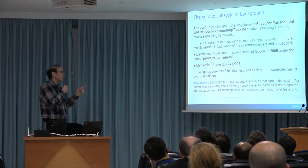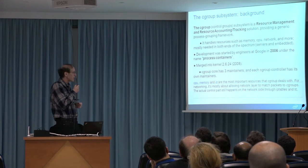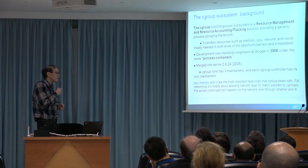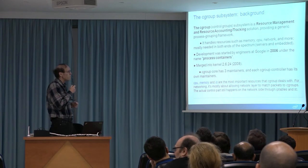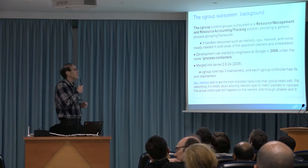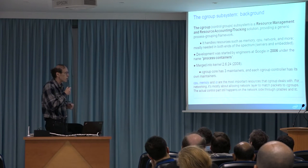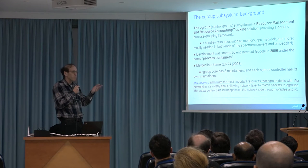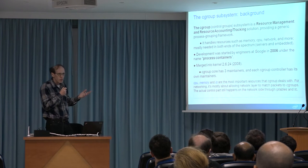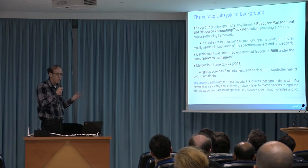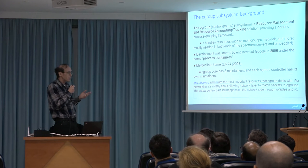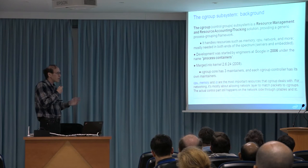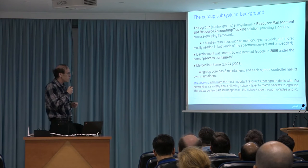The Cgroup core has three maintainers: Stefan Li, Tejun Ho, and Johannes Weiner. Each controller has its own maintainers. For example, the memory controller, which is probably the most complex, has three maintainers. Other controllers have one or more maintainers.